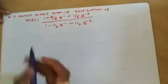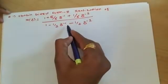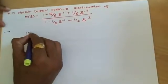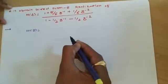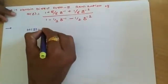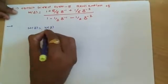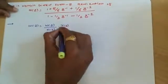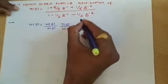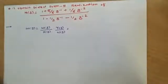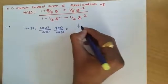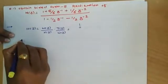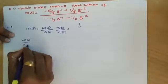We will obtain the Direct Form II realization of the given transfer function. The process is simple: first we divide this into two parts — an all-pole system and an all-zero system. We write W(z)/X(z) times Y(z)/W(z), which equals the same equation. First we simplify for the all-pole system and then for the all-zero system.